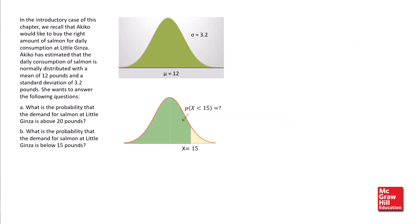What is the probability that the demand for salmon at Little Ginza is below 15 pounds? Using the NORM.DIST Excel function, we substitute 15, 12, 3.2 into x, the mean, and sigma, respectively, and set the cumulative option to true. The last argument tells Excel to obtain the area below 15. The probability is 0.8257 or 82.56%. Using R function pnorm, we set the lower.tail equal to true to obtain the same probability.